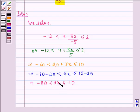But since we are required to find x, we divide this entire expression by 3 to get the range for x. So we divide throughout by 3 and we have -80/3 < x ≤ -10/3.